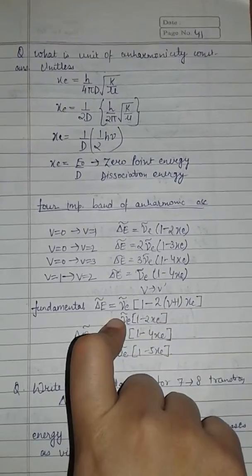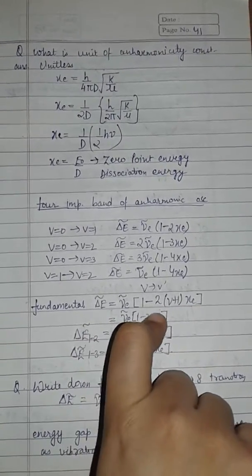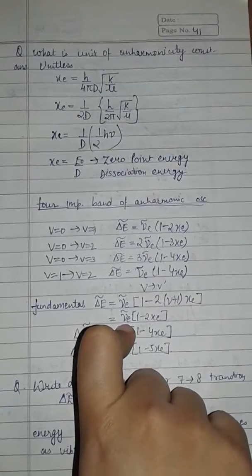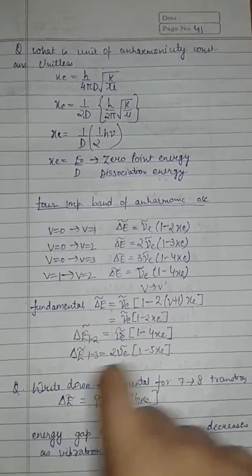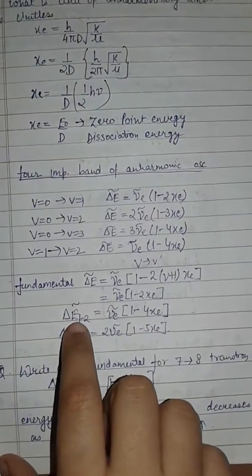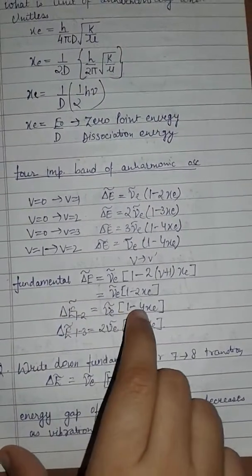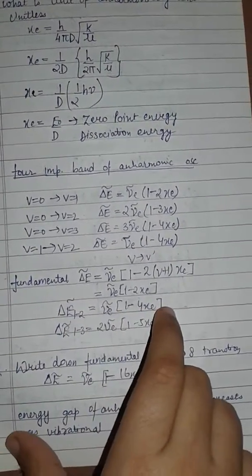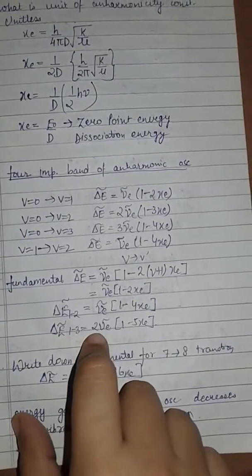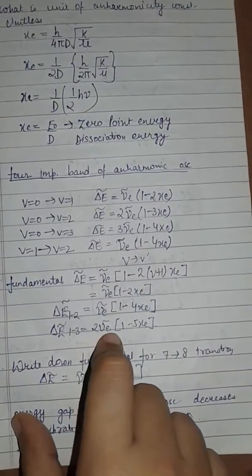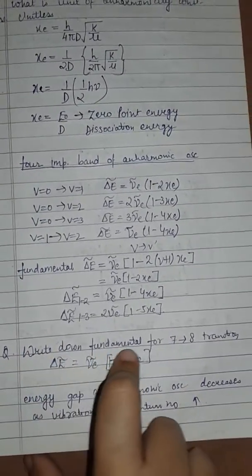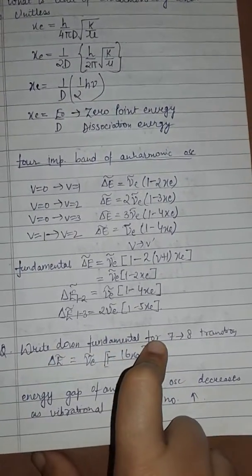The general formula for fundamental transitions is ΔE = ν_e[1 minus 2(V+1)X_e]. For V=0 to 1: ΔE = ν_e(1 minus 2X_e). For 1 to 2: ΔE = ν_e(1 minus 4X_e). For 1 to 3: ΔE = 2ν_e(1 minus 5X_e).